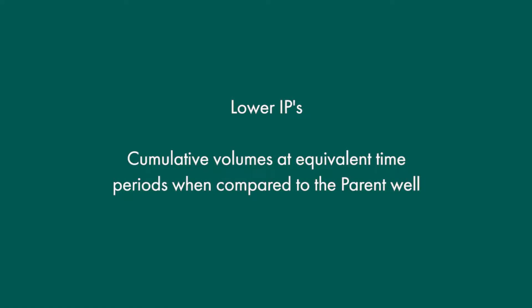How do we quantify or identify that the child well is underperforming the parent well? Some of the general rules with well interference are that IPs will be lower at equivalent time periods, or cumulative volumes will be lower at equivalent time periods when compared to the parent well. It may also show up as higher decline rates compared to the parent well.